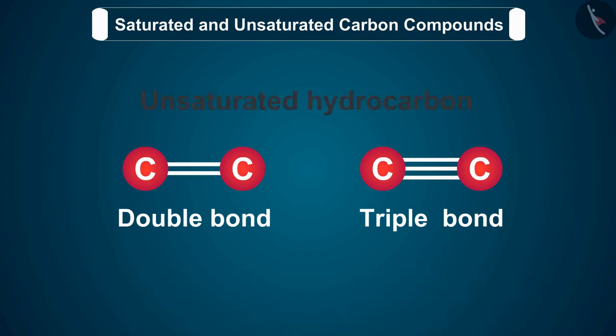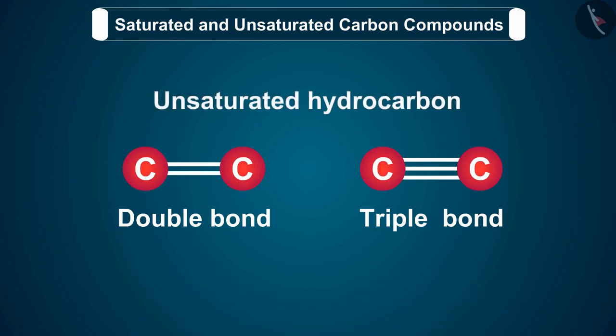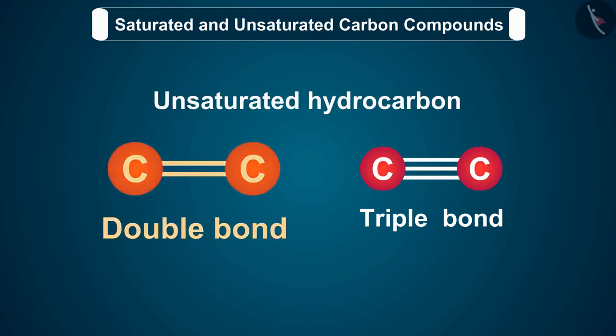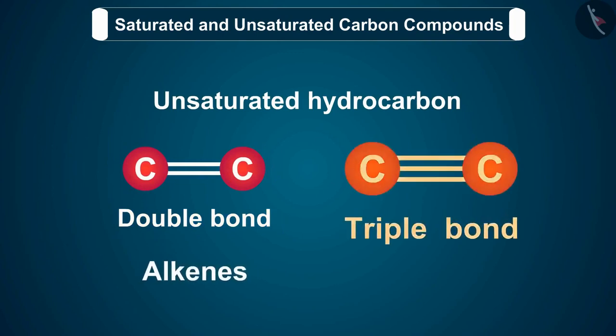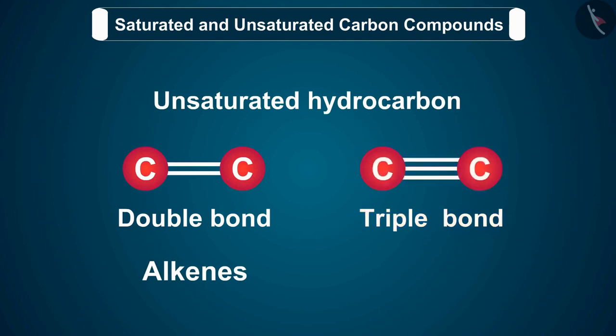Unsaturated hydrocarbons are of two types: double bonded hydrocarbons, also called alkenes, and triple bonded hydrocarbons, also called alkynes.